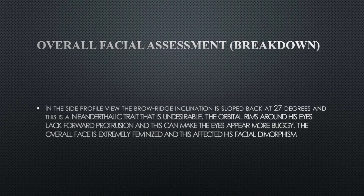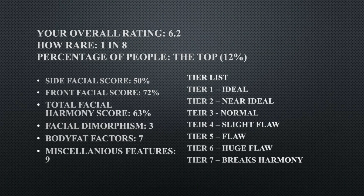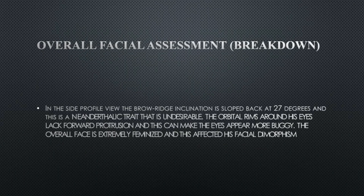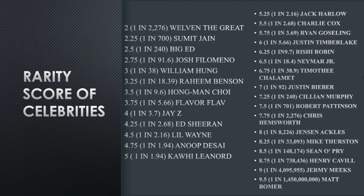In the side view profile, the brow ridge inclination is sloped back at 27 degrees — this is a Neanderthalic trait that is undesirable. The orbital rim shows protrusion around the eyes, which can make the eyes appear more buggy. The overall face is extremely feminized, which affects his facial dimorphism score of 3. His harmony score is 63 and his overall is 6.2, so dimorphism kind of evened things out. His facial dimorphism is the main problem.